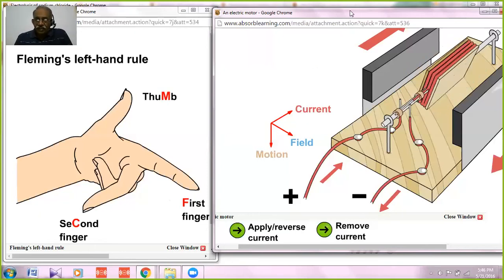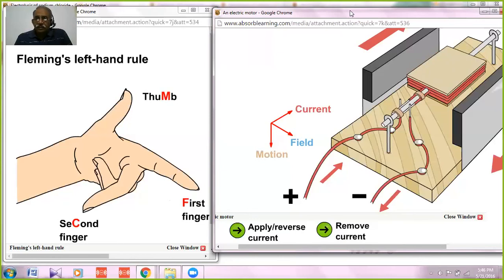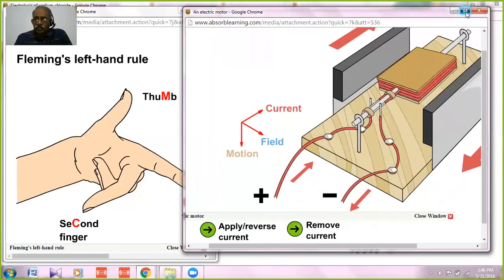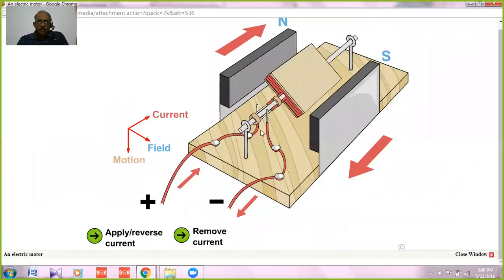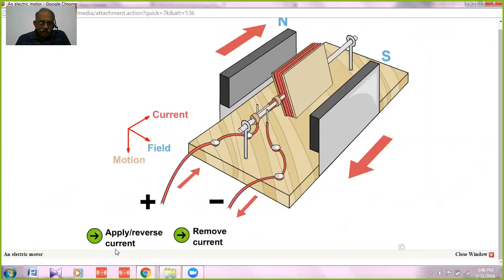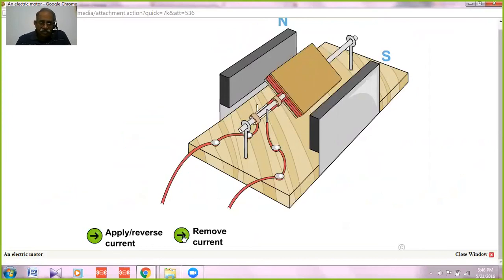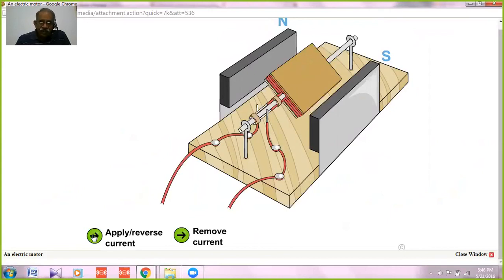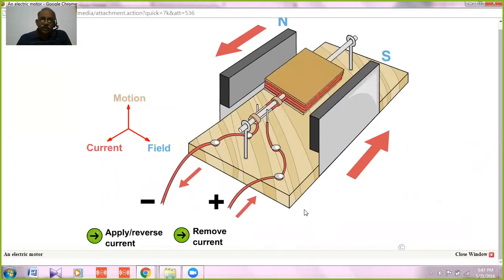And this is how it works. I am now showing you the full view. Now see, this is the north pole, this is the south pole. And then if I reverse the current, apply, remove the current it stops, apply the current in the reverse direction, the electric lines of force towards this side, the current is flowing like this. So this is how the electric motor works. Thank you.